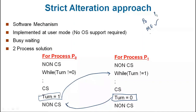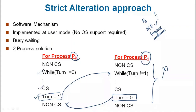Now, progress property. Suppose P0 process wants to enter the critical section. It runs the code, turn value is 0, executes the critical section, then sets turn equal to 1. Now P1 is supposed to go. But P1 is not interested in executing the critical section. P1 is not executing, and P0 has stopped. This means that P0 cannot execute the critical section, nor can P1. Therefore, progress property is not satisfied.